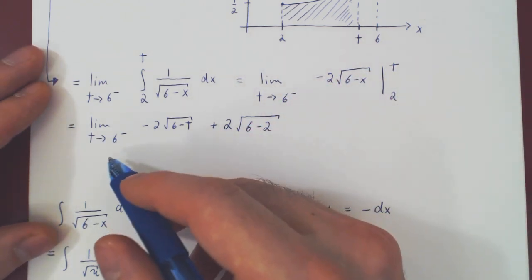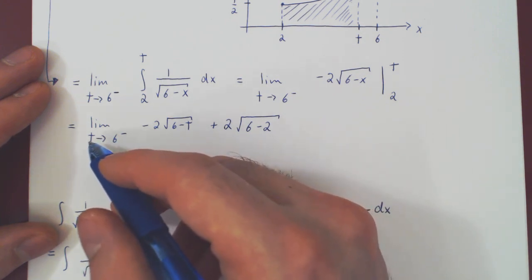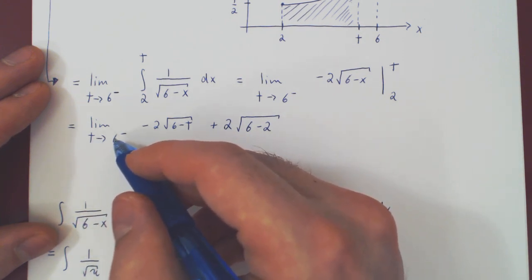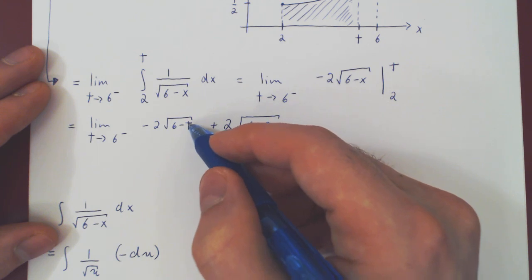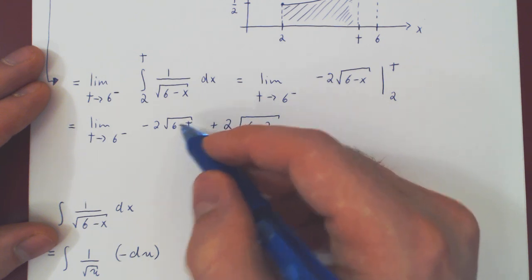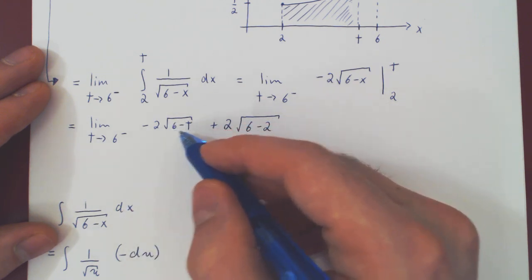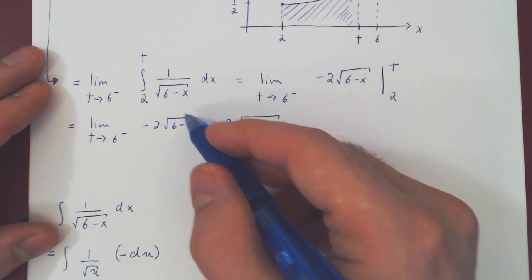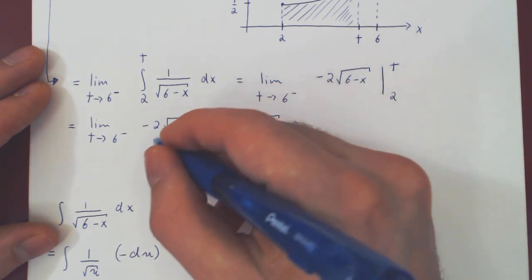Well, let's see what our limit is. As t gets closer and closer to 6 from the left, 6 minus t is positive, but will shrink to 0. 6 minus 6 is 0. The root of 0 is 0, and so this term simply shrinks to 0.